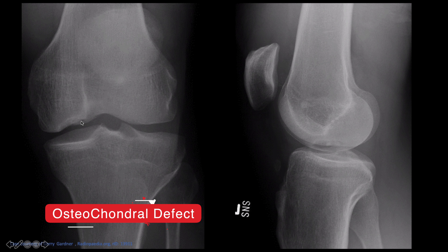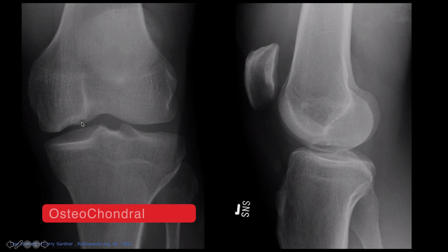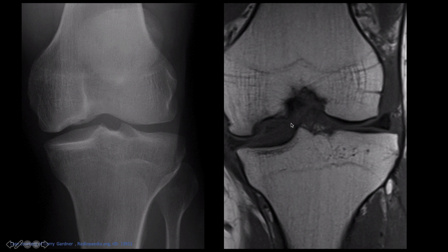The next case is an osteochondral defect. You can see on the AP view how there is a dip at the lateral aspect of the medial femoral condyle, from repetitive micro trauma. You can see that on the lateral view as well. When you look at the MRI, you can see it much better - this dip corresponds to an osteochondral defect.